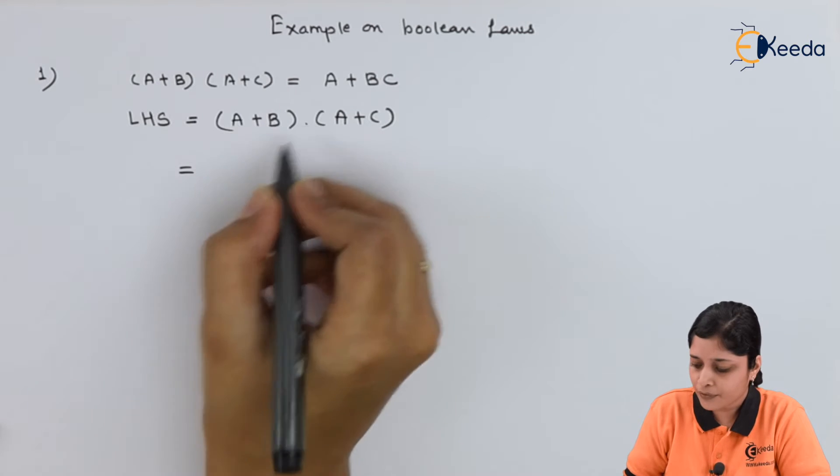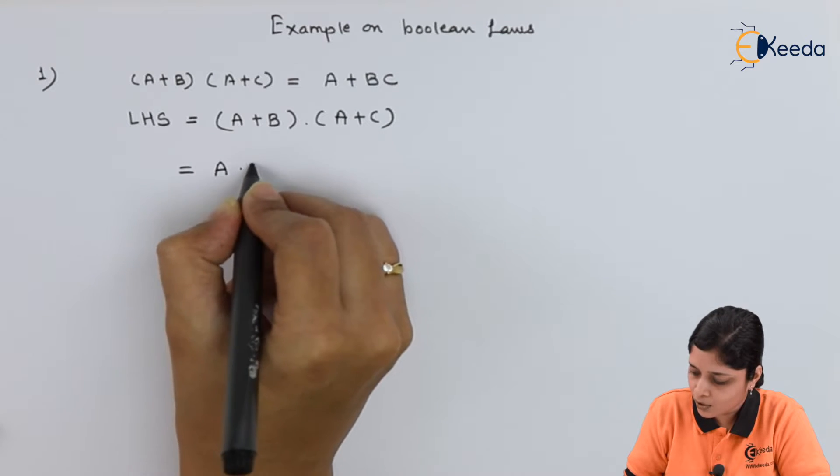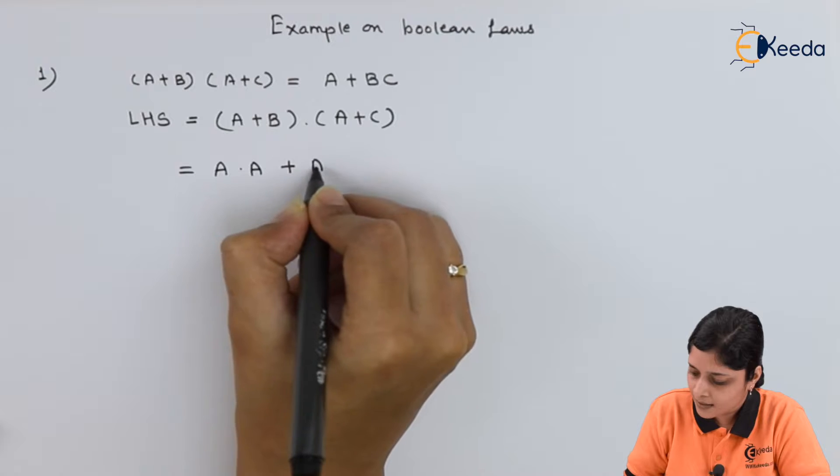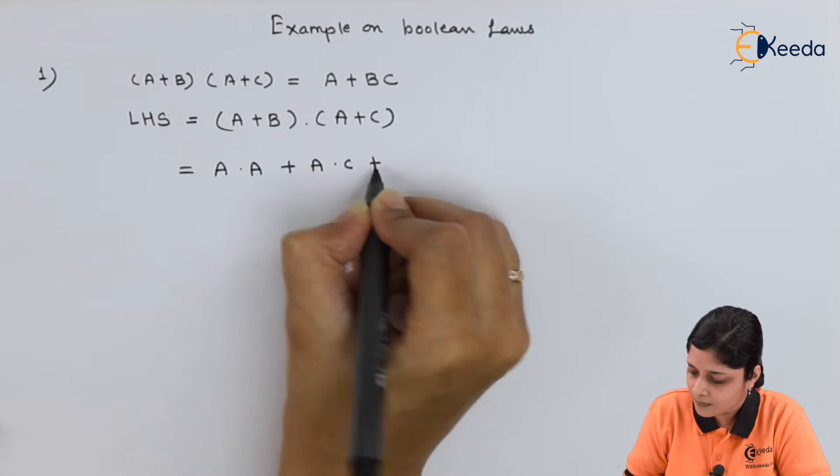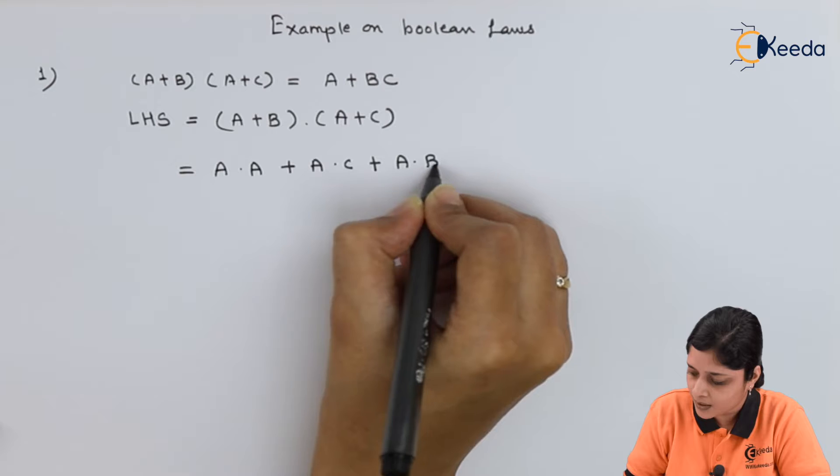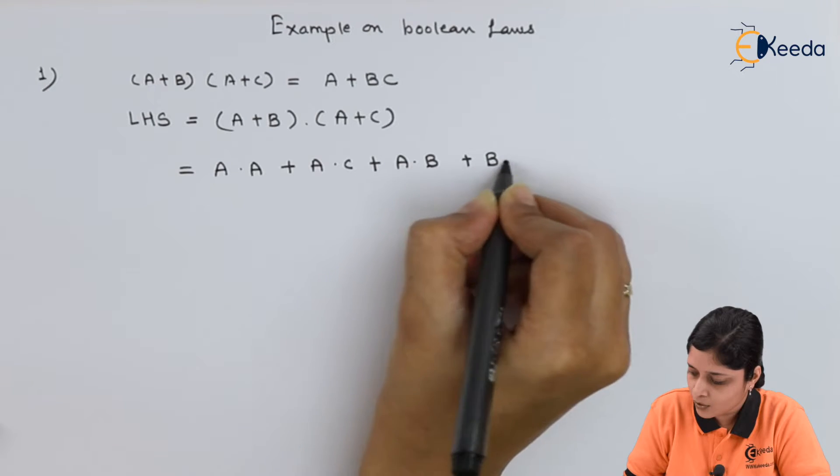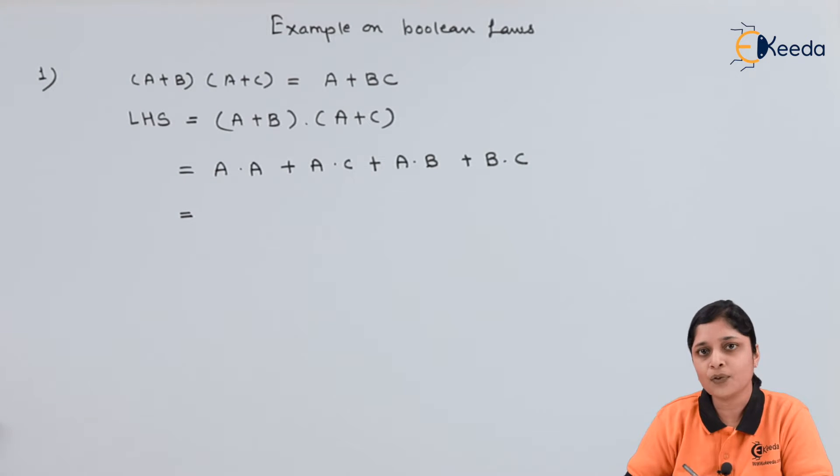Then you have to expand: A·A + A·C + A·B + B·C. If you expand the bracket, you will get this expression.